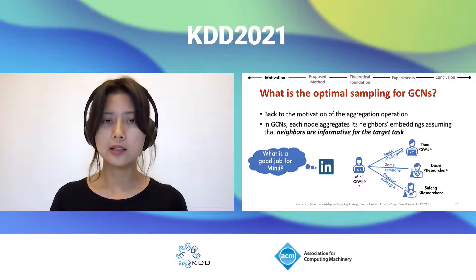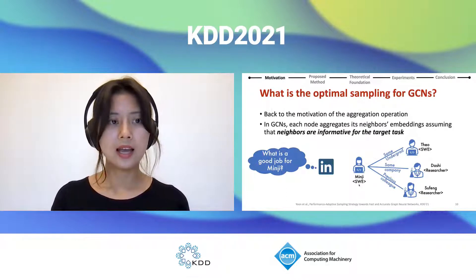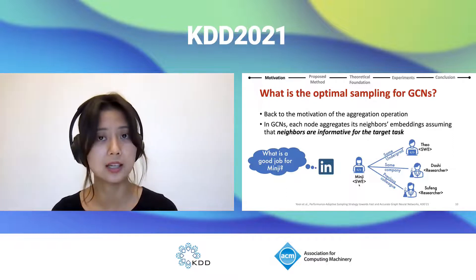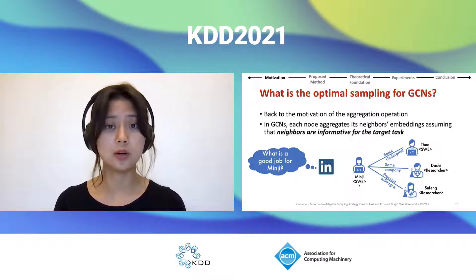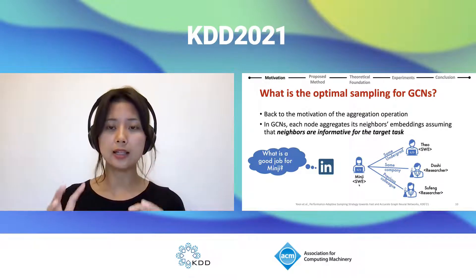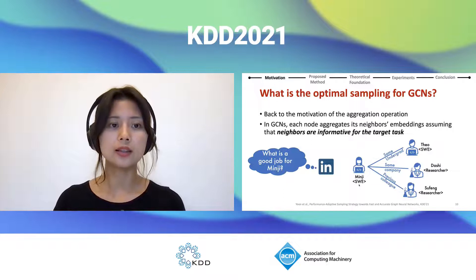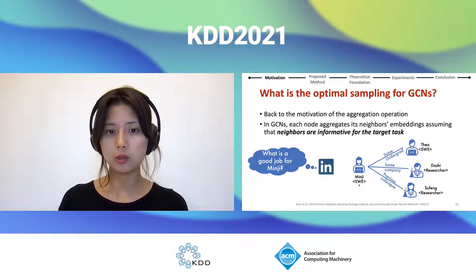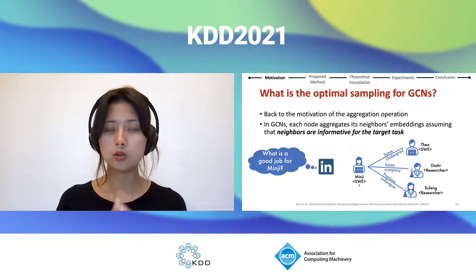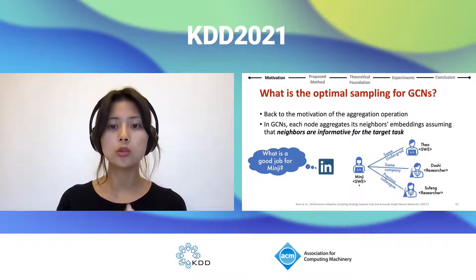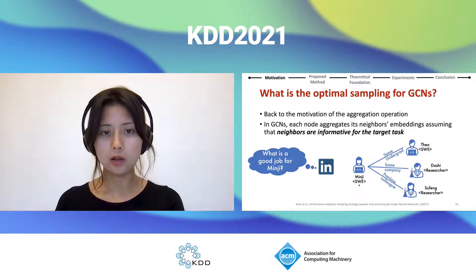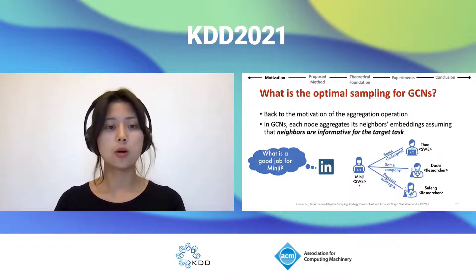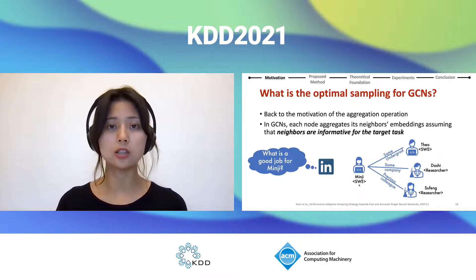Then we ask: what is the optimal sampling for GCNs? We want to return to the motivation of the aggregation operation in GCN. In GCN, a node aggregates its neighbors' embeddings, assuming that neighbors are informative for the target task. For example, when LinkedIn tries to make a job recommendation for Minji, it not only looks at Minji's information, but also refers to neighbors' information — colleagues who work in the same company or study in the same field are likely helpful for making a job recommendation.